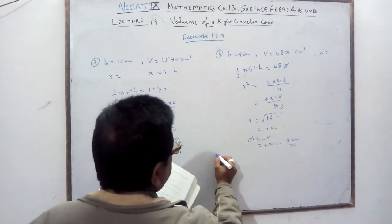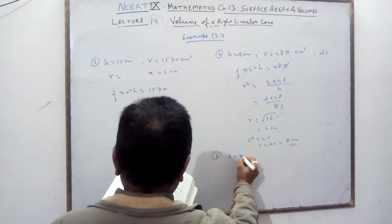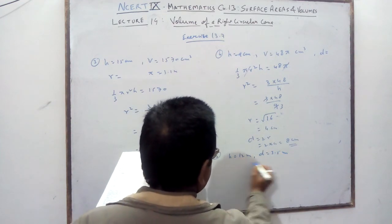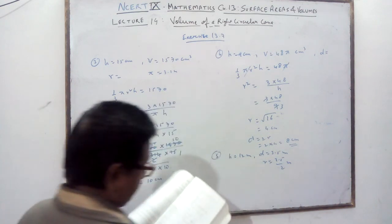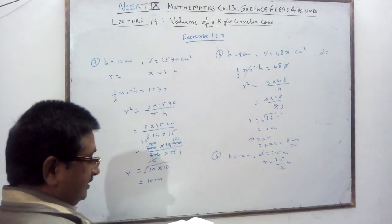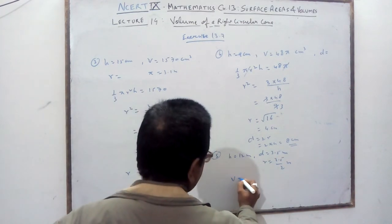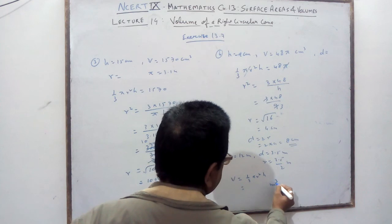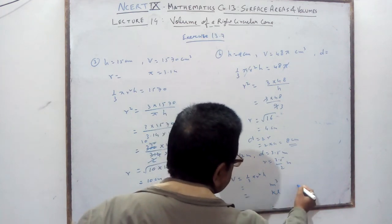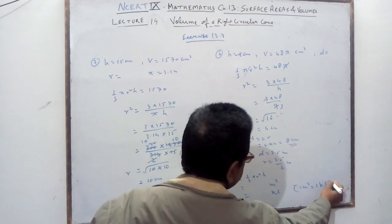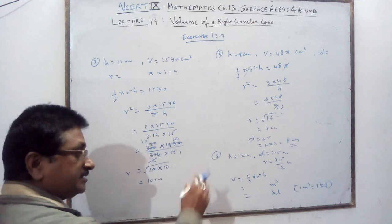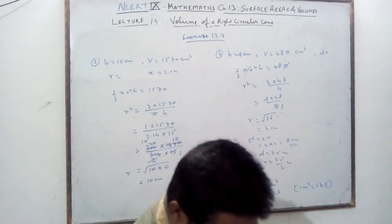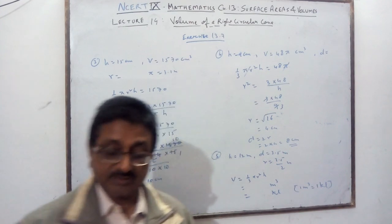Question 5: a conical pit is 12 meters deep and the diameter is 3.5 meters, so radius = 3.5/2 meters. Find the capacity in kiloliters. Calculate volume = (1/3)πr²h in cubic meters. Since 1 cubic meter = 1 kiloliter, the numerical value of volume in cubic meters directly gives the capacity in kiloliters.